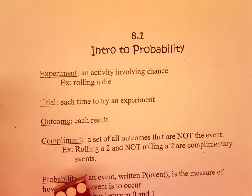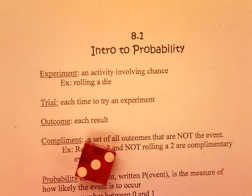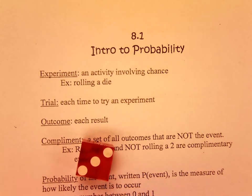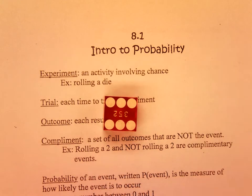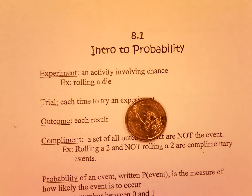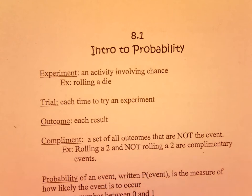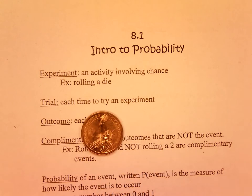The outcome is the result. So if I do a trial and the outcome was a 6, then I roll it again, that's a trial and the outcome is a 3. If I roll it again, that is a trial and the outcome is a 6. Just like if I flip a coin once, that's the trial and the outcome is heads.